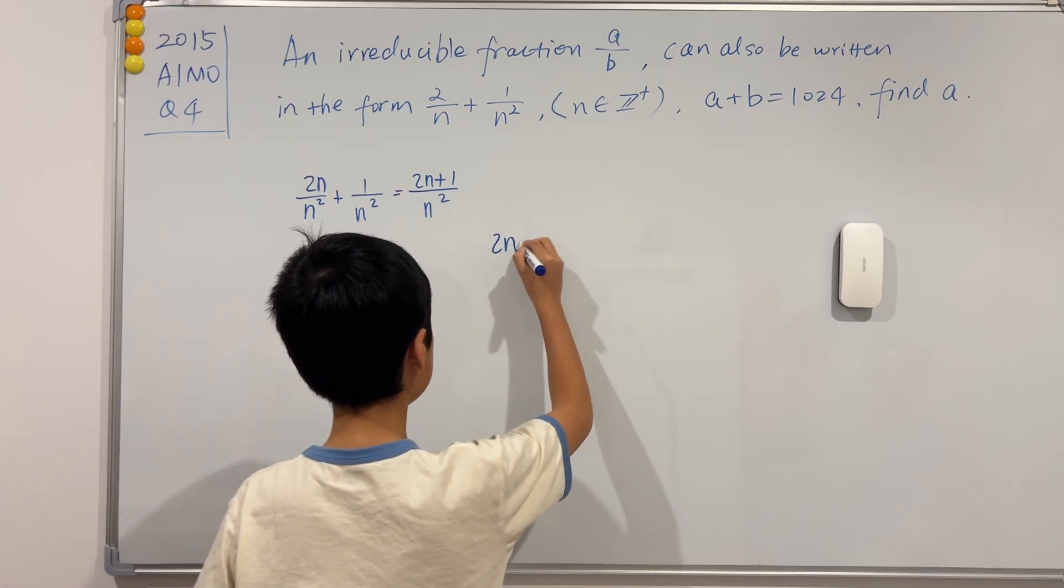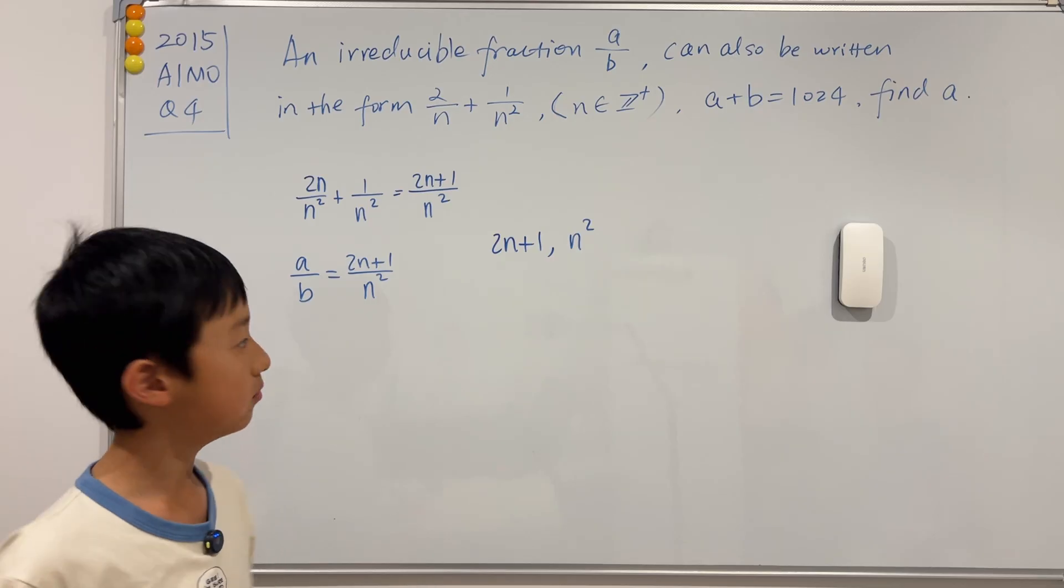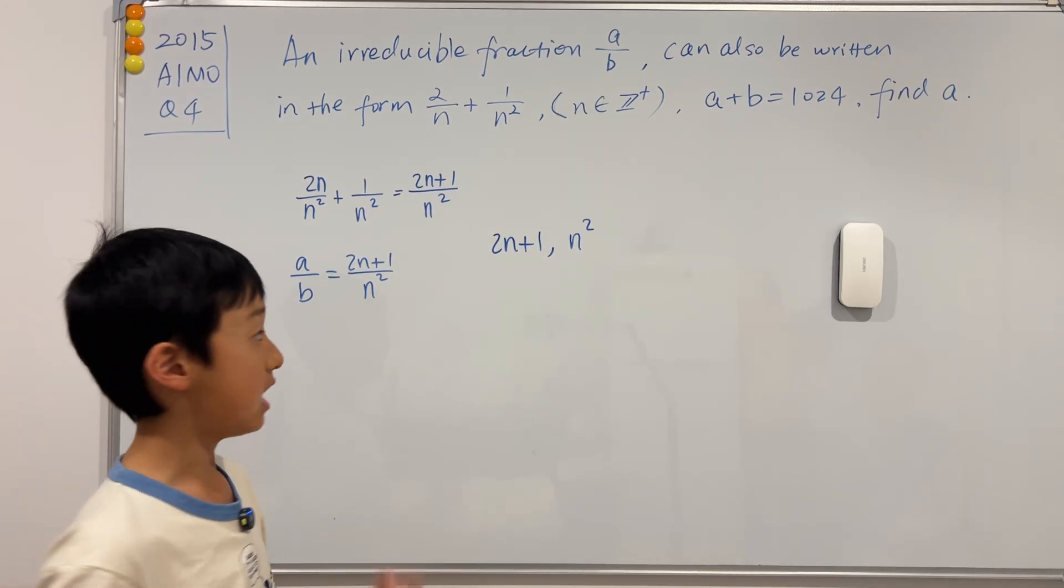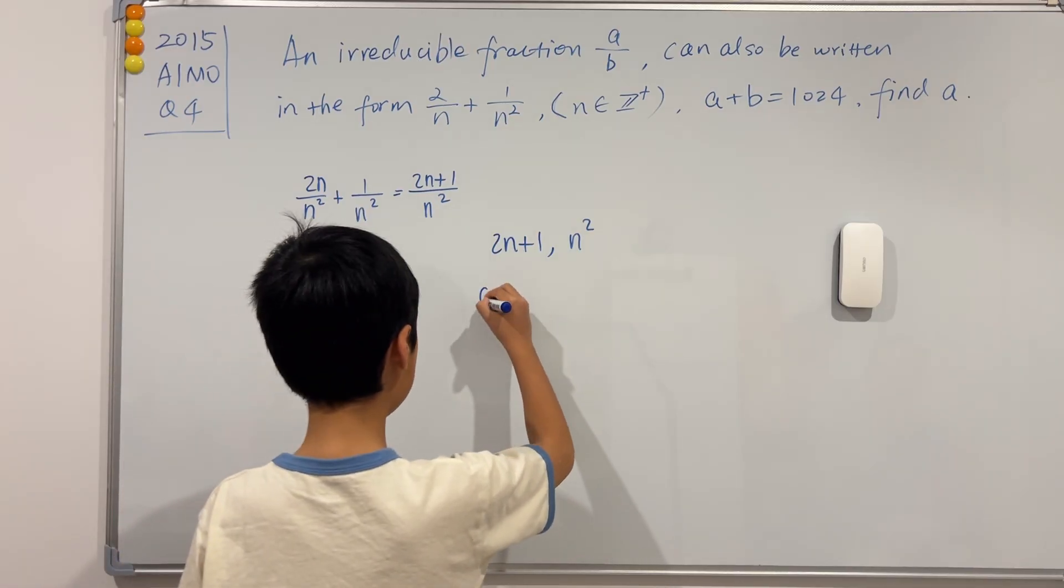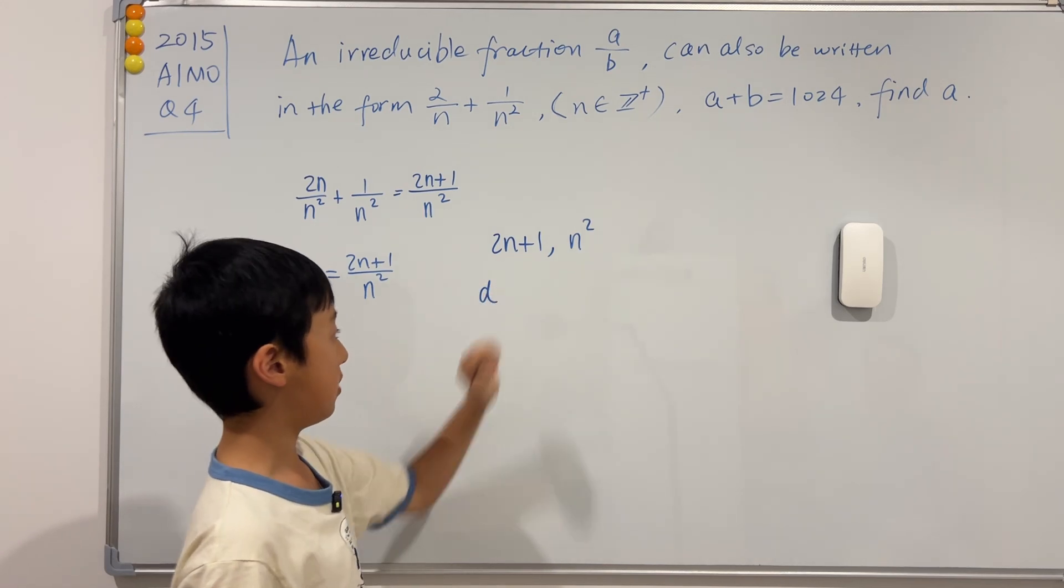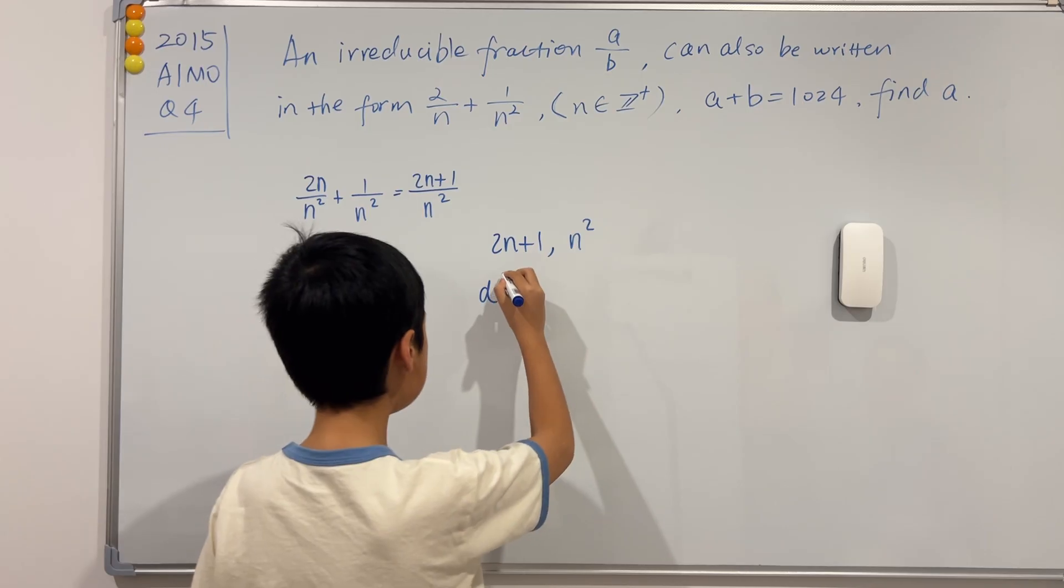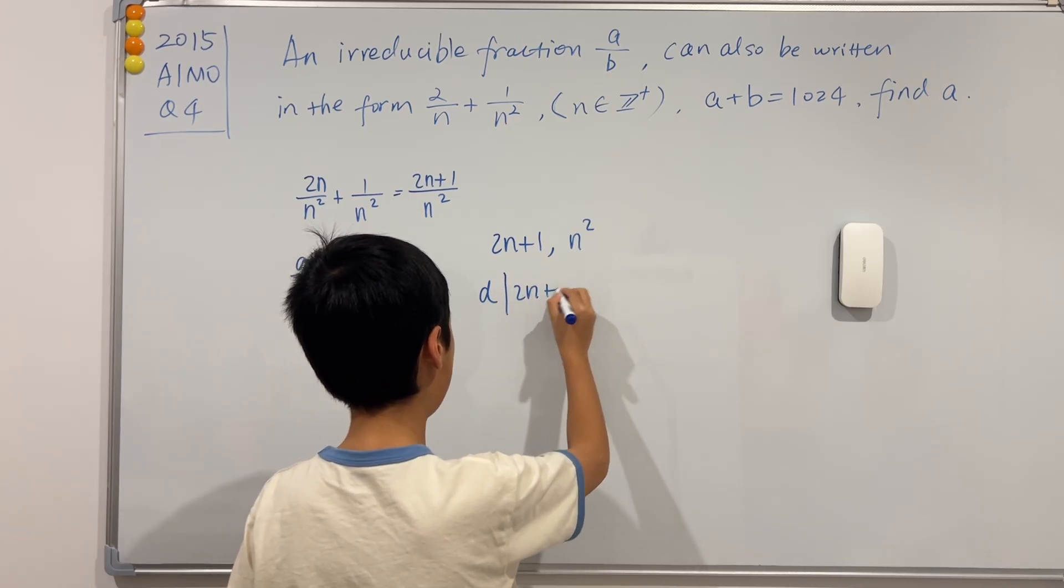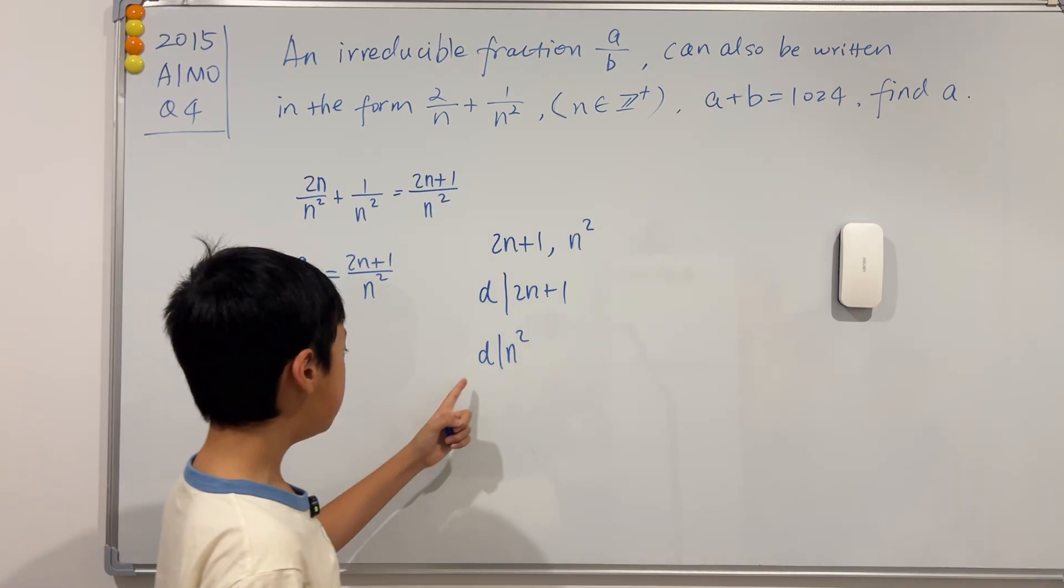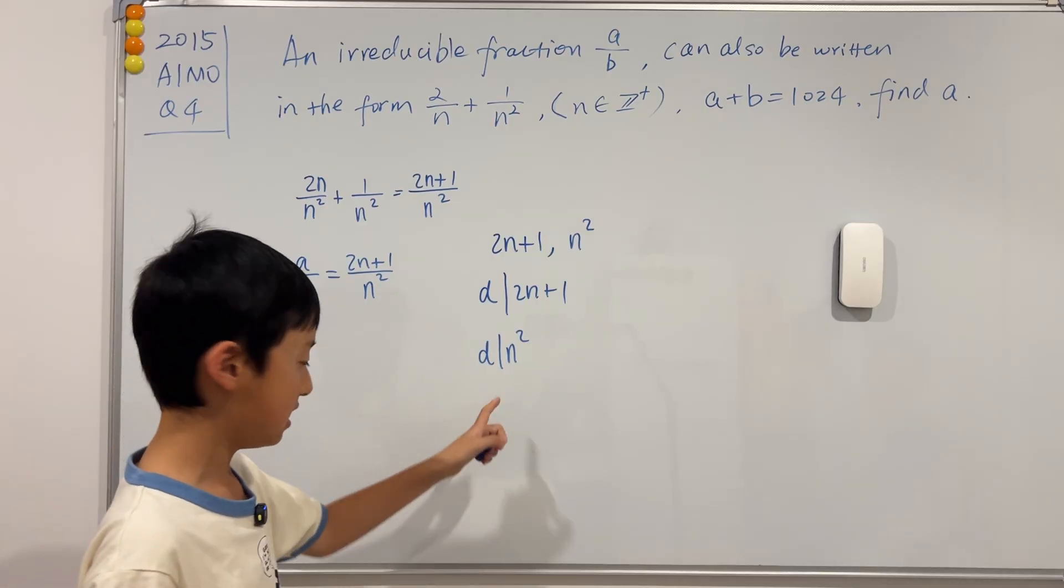How do I do that? I'm going to use a proof by contradiction. If I assume that there is a common prime factor D that divides both 2N plus 1 and N squared, we know that D has to divide 2N plus 1 and N squared. Now, if D divides N squared, then D also must divide N because D is prime.